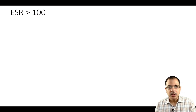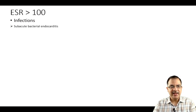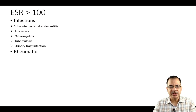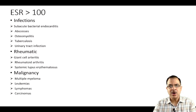ESR more than 100 — though ESR is a very non-specific investigation, when it is very high like more than 100 you suspect specific disorders: infections like bacterial endocarditis, abscess, osteomyelitis, tuberculosis, and urinary tract infections; rheumatic diseases like giant cell arteritis, rheumatoid arthritis, and SLE; and malignancies such as multiple myeloma, leukemia, lymphoma, or carcinomas.